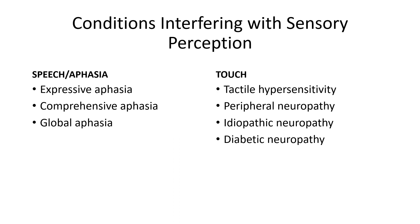Expressive aphasia is known as non-fluent aphasia or Broca's aphasia. This is due to damage in the frontal lobe of the brain. Individuals with expressive aphasia may understand speech but not be able to speak the words they want to say. Comprehensive aphasia, or fluent aphasia, also known as Wernicke's aphasia, is due to damage to the temporal lobe of the brain. An individual with comprehensive aphasia speaks in long sentences that have no meaning and often will include unnecessary and made-up words.